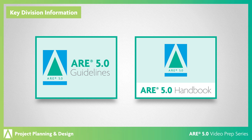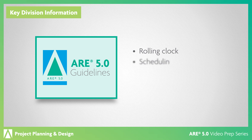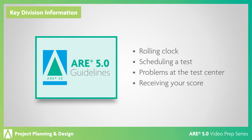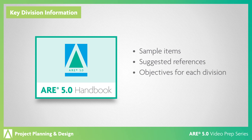Be sure to review the latest ARE 5.0 Guidelines and ARE 5.0 Handbook, both on the NCARB website. The guidelines contain critical information about ARE 5.0 policies, including the rolling clock, scheduling a test, problems at the test center, and receiving your score. The handbook discusses the content of all six divisions and includes sample items and suggested references, as well as more information on the objectives for each division.